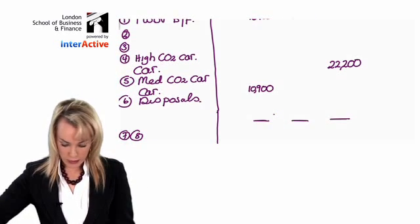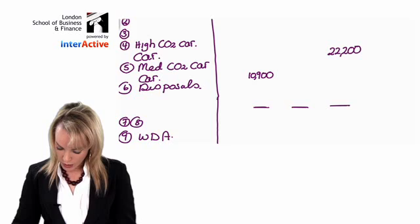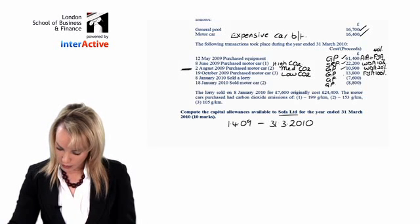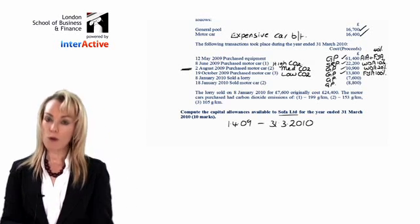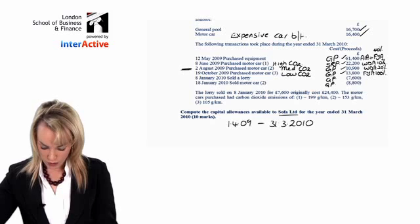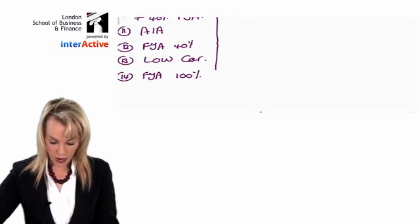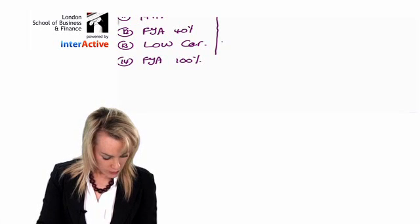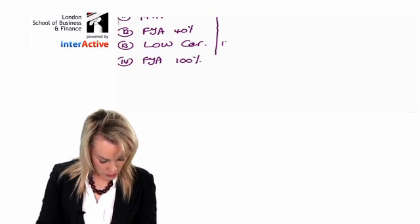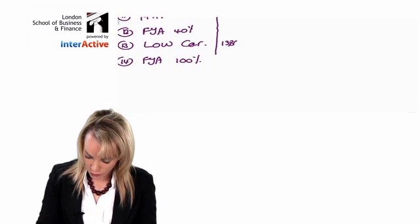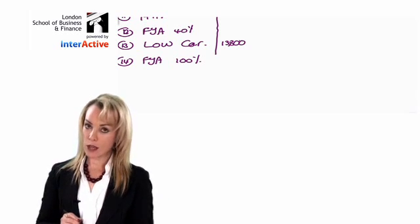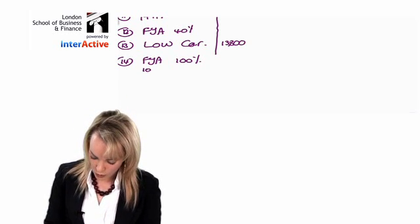Now the next one is another car, but that's a low emission car. Low emission cars are going in slightly further down because they're going to get 100% FYA, so I'm going to put that down here, 13,800.